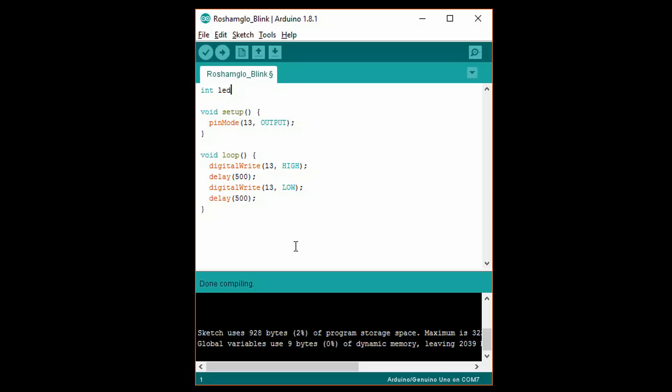We then want to assign a value to our variable, so write equals 13 semicolon. We can now replace all other instances of the number 13 in our program with led. This new program will run the same as before, and it has the added benefit of letting us change one number instead of three to switch which pin we want to use.